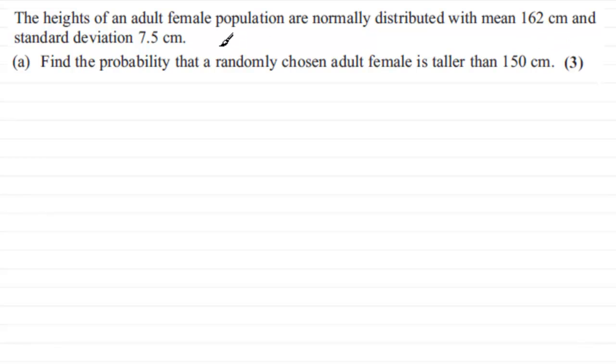Now the first thing that I'd want to do for a question like this is define the random variable. I'm going to say let X be the random variable, put RV for short. And what it's going to be is the height of the female measured in centimeters. We need to say that this is distributed as a normal distribution.